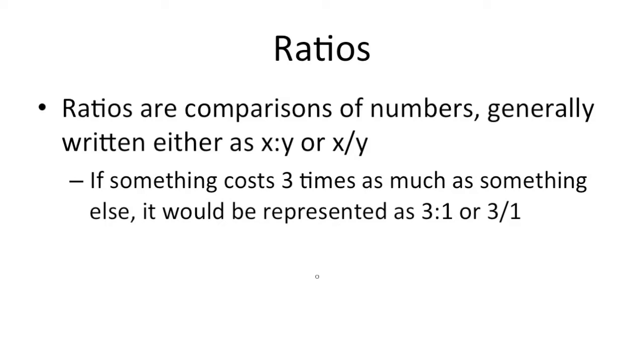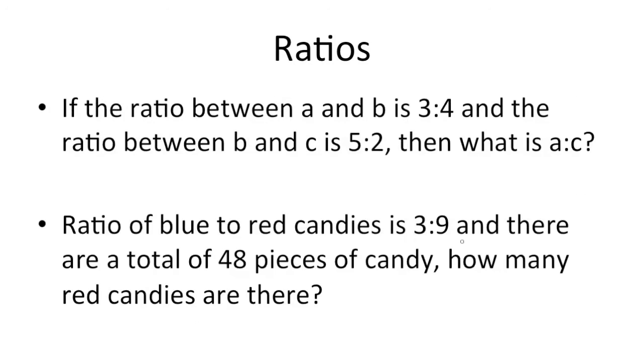So ratios are comparisons of numbers, generally written either as x to y or x over y. If something costs three times as much as something else, it would be represented as 3 to 1 or 3 over 1. So here's some sample problems. If the ratio between a and b is 3 to 4, and the ratio between b and c is 5 to 2, then what's a to c?